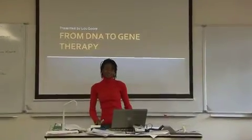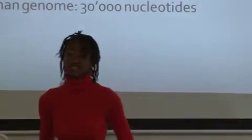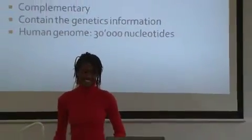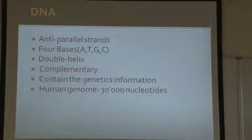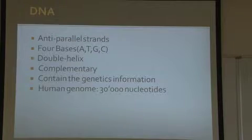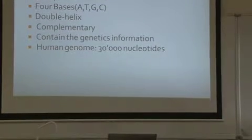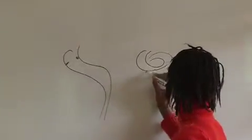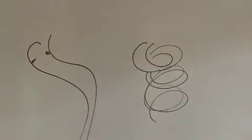Some of the methods used in gene therapy — but first, since we have some physics students who don't know the basics of DNA: DNA is basically constituted of two strands which are anti-parallel. They are made of bases which are complementary, like G complementary to C, and A complementary to T. It forms a double helix structure, but you can revise it with Mr. Scarlett.